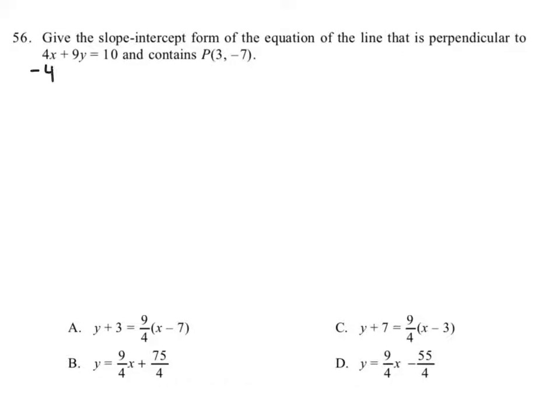I'm going to take 4x from both sides and we get 9y equals negative 4x plus 10. And then we will divide everything by 9 so that it reads y equals.